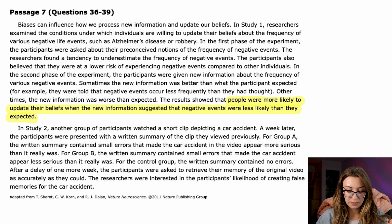The researchers found a tendency to underestimate the frequency of negative events. The participants also believed that they were at a lower risk of experiencing negative events compared to other individuals. So sort of that invincibility fallacy, if you will, that like teenagers have, we kind of carry that throughout adulthood is what it sounds like. In the second phase of the experiment, the participants were given new information about the frequency of various negative events. Sometimes the information was better than what the participant expected. For example, they were told that negative events occur less frequently than they had thought.